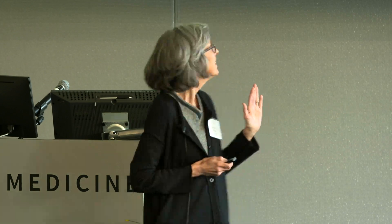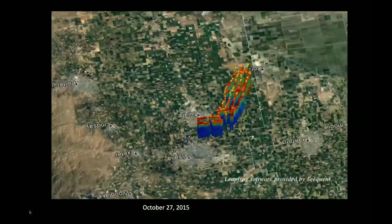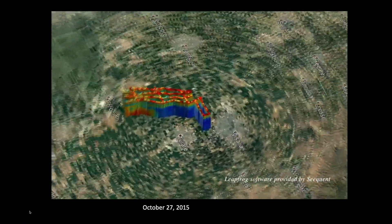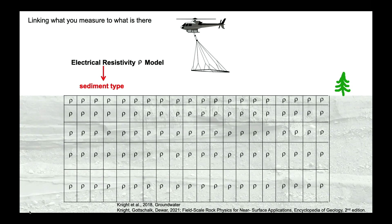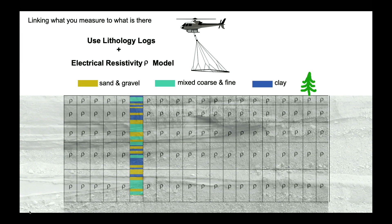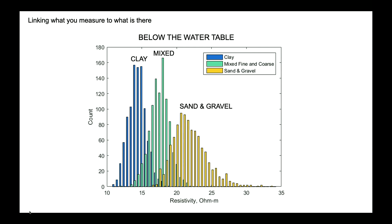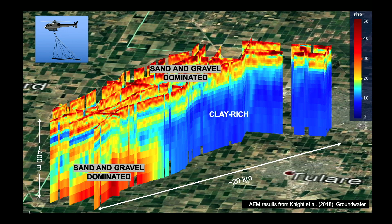The system flew across the Tulare Irrigation District, and the data that came back was unbelievable. This is the resistivity looking down 400 meters below the ground surface along our flight lines in the Tulare Irrigation District. A big part of what we did was linking what you measure to what is there — the same physics, making an electrical measurement. We understand the materials there: sand and gravel. So we used co-located drillers' logs at locations where we had a resistivity measurement from our helicopter-deployed system, and we knew the materials that were there. Setting up the equations, we were able to come up with a relationship to go from resistivity to sediment type. And what came back was an amazing image of the subsurface.